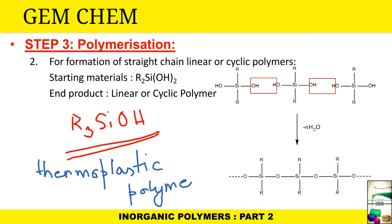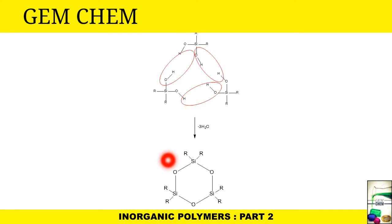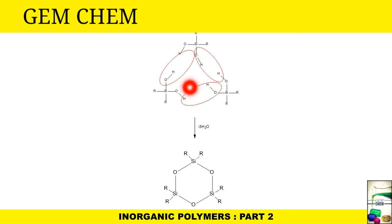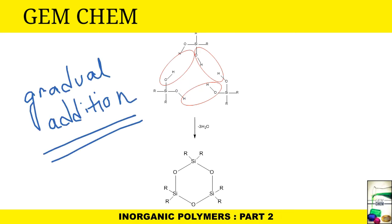Next we will see the preparation of cyclic silicones. A 6-membered cyclic silicone is prepared using 3 molecules of R2Si(OH)2, each eliminating one water molecule, giving an elimination of 3 water molecules total. The same R2Si(OH)2 moiety is used, but the key difference is that the starting material is added gradually — not all at once — to prevent linear polymerization, making it a limiting reactant, and ultimately giving the cyclic type of silicone.